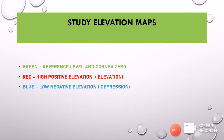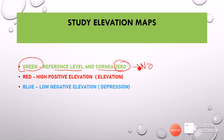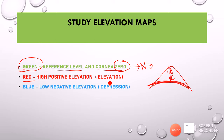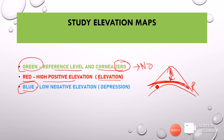In the elevation maps, as with curvature maps, they are color-coded. A green color means the reference level and corneal curvature are the same — zero difference, no risk. A red zone means the cornea is more elevated compared to the reference plane, indicating high positive elevation, which is risky — meaning the cornea is steeper than the reference plane. A blue zone means the cornea is flatter compared to the reference zone, below the reference level, called low negative elevation or depression.